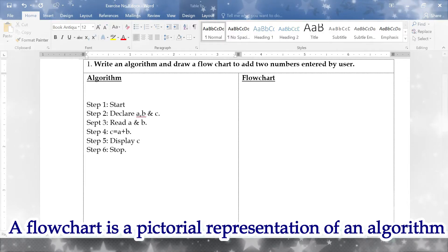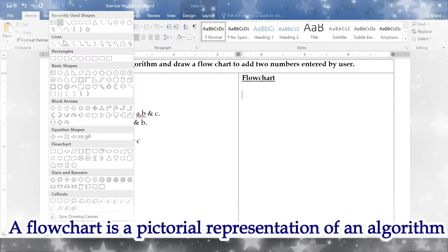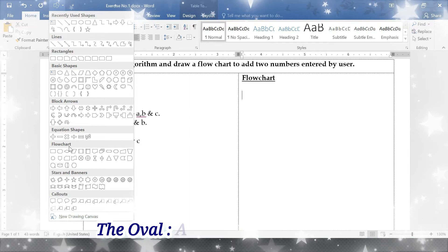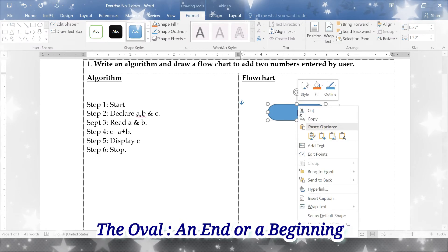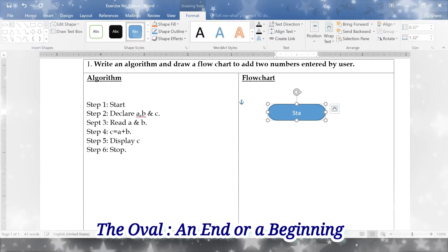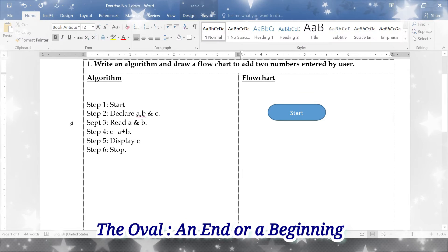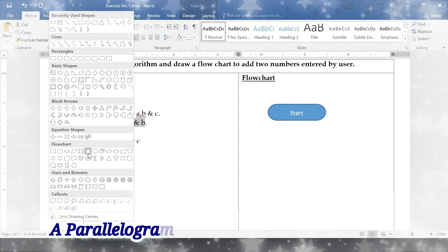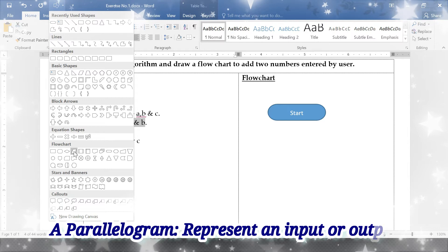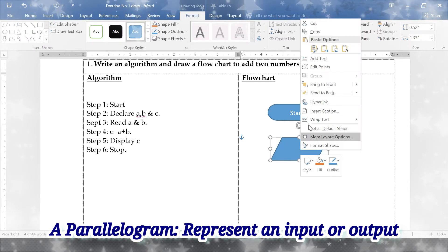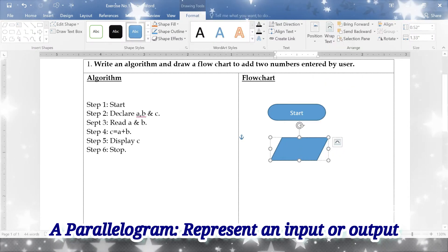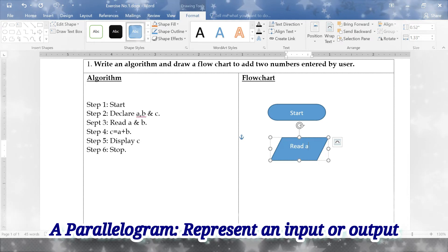Now we want to draw the flowchart. In shapes we'll be having flowchart where you can find start. Right click, add text, say start. Read a and b.